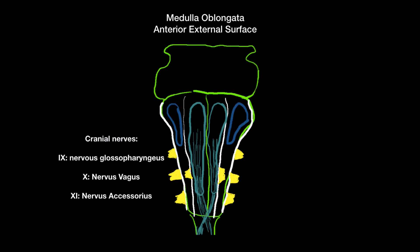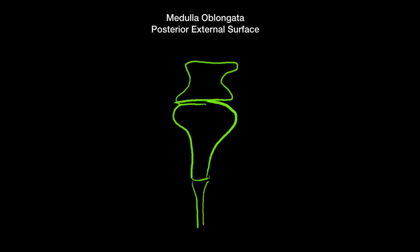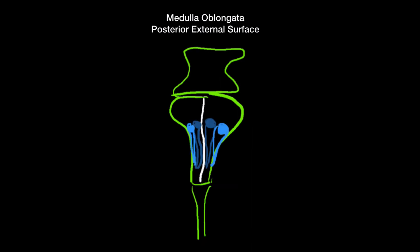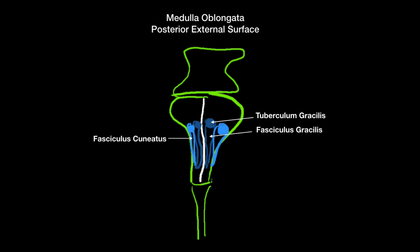Now let's go ahead and look at the posterior external surface. You're going to have what is called the sulcus medianus posterior — this time on the posterior side. The first structure here is called the fasciculus gracilis, located on either side of the sulcus medianus posterior. On the fasciculus gracilis you're going to have the tuberculum gracilis on top, and going even more laterally you'll have the fasciculus cuneatus with its tuberculum cuneatus.